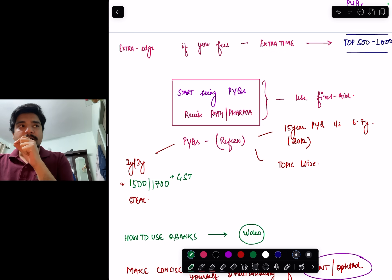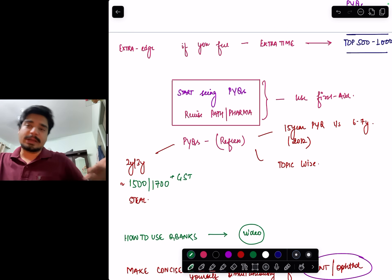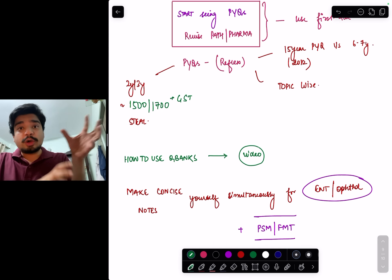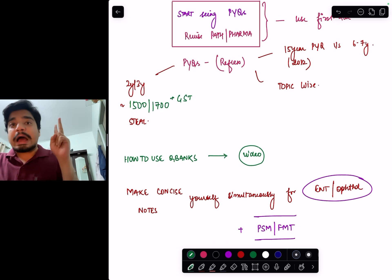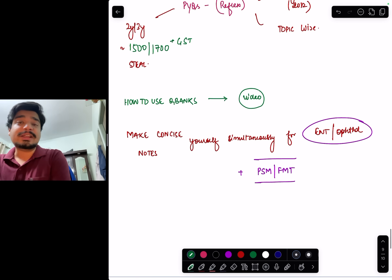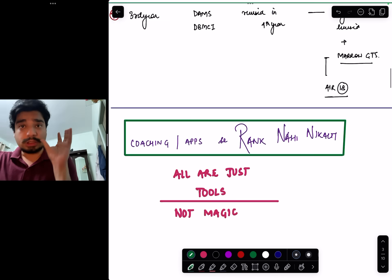What I'm saying is, after studying for one week, instead of waiting to complete entire PSM then doing PYQs, you'll get topic-wise PYQs in Reflex. Just another 1500 bucks investment will help you a lot. How to use Q bank, which module is important, I'll make another video. How to make concise notes - I keep talking about concise notes - how to make them for PSM, FMT, ENT, ophthalmology, another video I'll discuss.